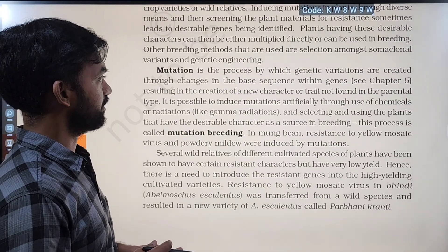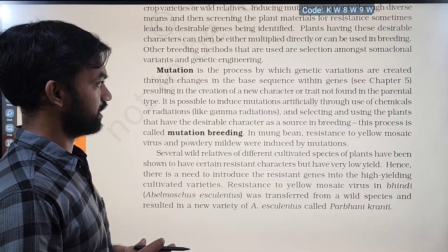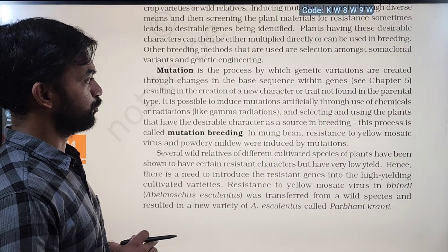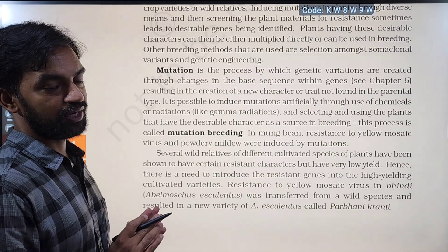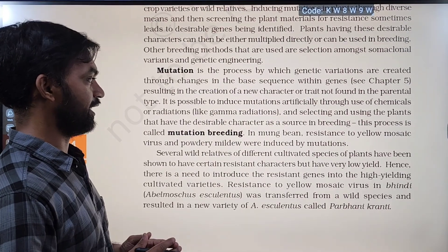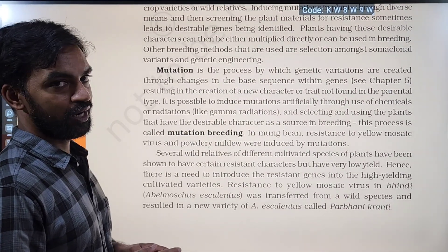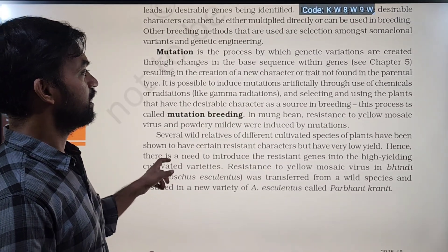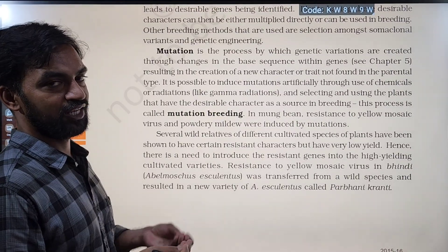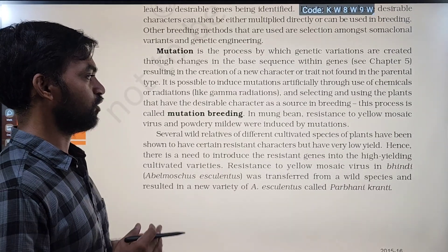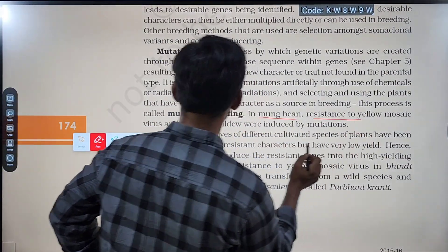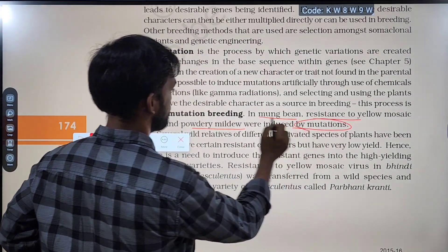Mutation is the process by which genetic variations are created through changes in the base sequence within genes — adenine, guanine, cytosine, thymine — resulting in the creation of new characters or traits not found in the parental type. It is possible to induce mutations artificially through use of chemicals or radiations such as gamma radiation. This process is called mutation breeding. For example, in moong bean, resistance to yellow mosaic virus and powdery mildew were induced by mutation.